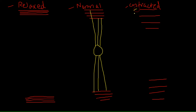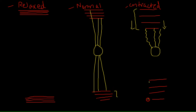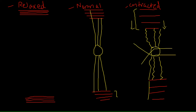When the ciliary muscle contracts, it gets thicker. The muscle fibers move inward, so the suspensory ligaments become loose — not as tight as before. As a result, the lens becomes more circular. This is exactly what happens in accommodation: contracting the ciliary muscle causes the lens to get thicker and increases its refractive power.